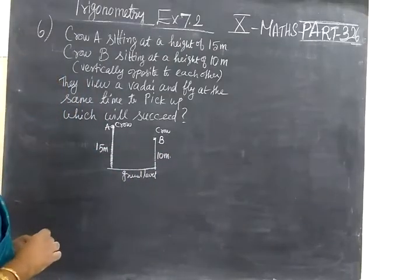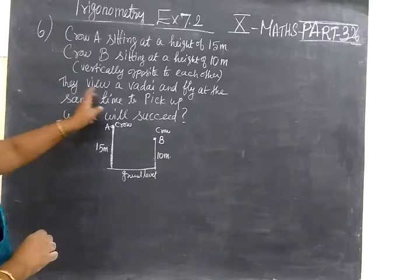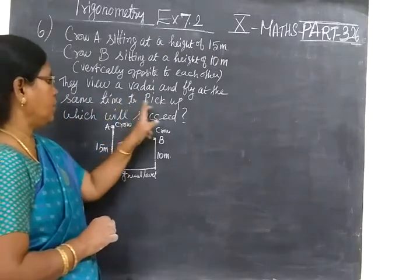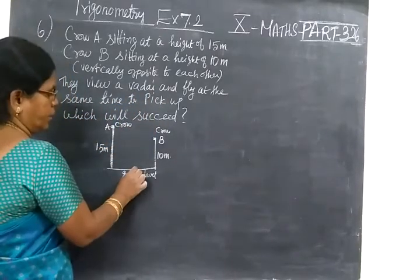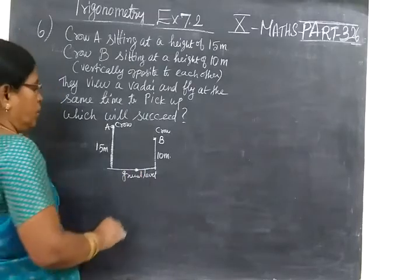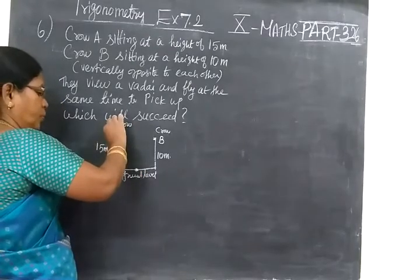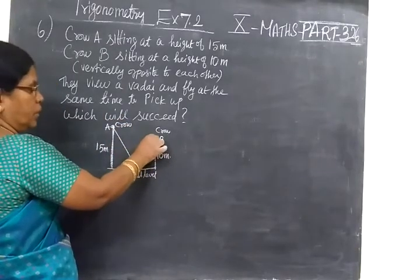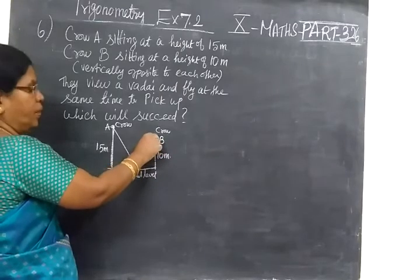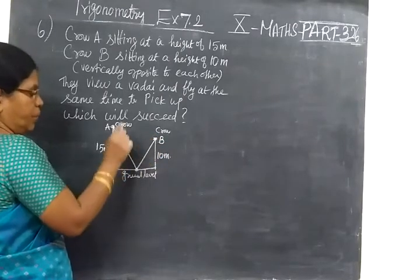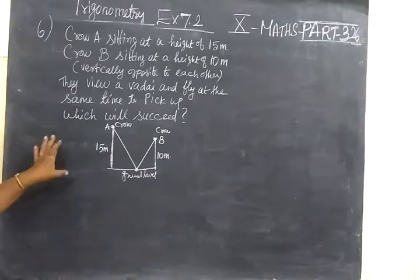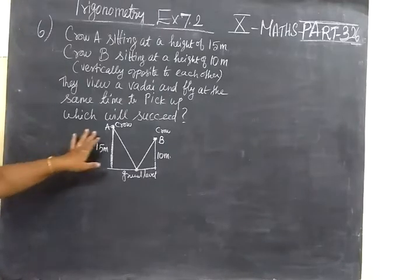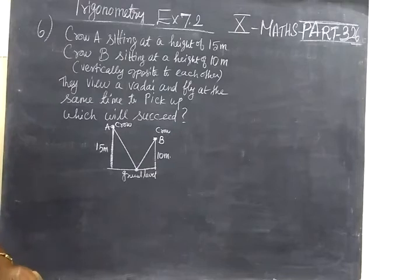They see a vadai and fly at the same time to pick it up. Crow A flies to pick up the vadai, and Crow B also flies at the same time to pick up the same vadai. We see which one will succeed, whether Crow A or B. That means we want to find the shorter distance.